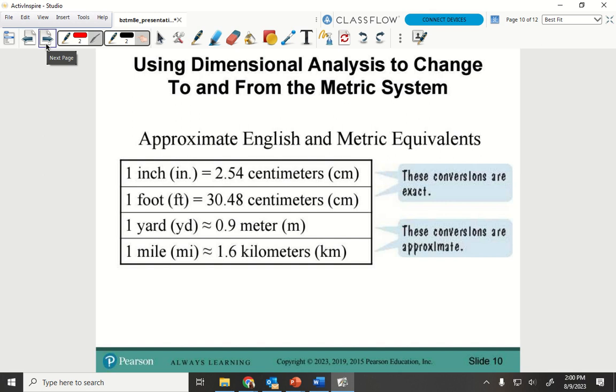English and metric equivalents. So, 1 inch, 2.54 centimeters, 1 foot, 30.48 centimeters, 1 yard, 0.9 meters. Now, what is that? What's that symbol? Approximately. Approximately. What does that mean? We rounded, right? Approximately. So, that is rounded. Same thing. One mile is about 1.6 kilometers or kilometers for those people.